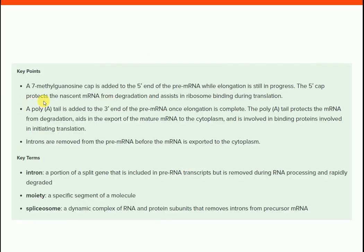Key points: the 5' cap is a 7-methylguanosine cap added at the 5' end of the mRNA — it protects the nascent mRNA from degradation and assists in ribosome binding during translation. The poly-A tail is added at the 3' end — it protects from degradation, helps in mRNA export, and assists in translation initiation. Introns are removed from pre-mRNA, and the mature mRNA is exported to the cytoplasm.